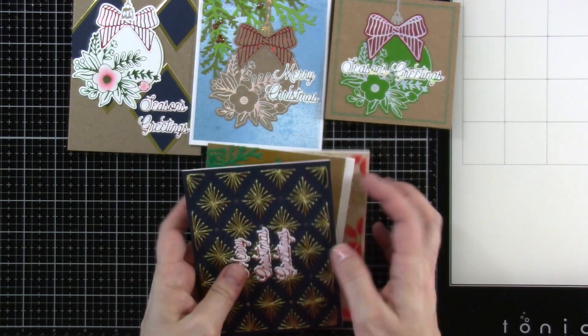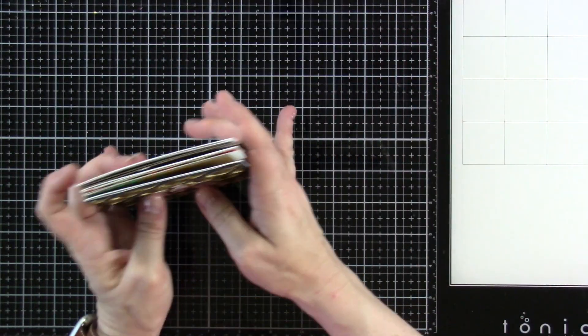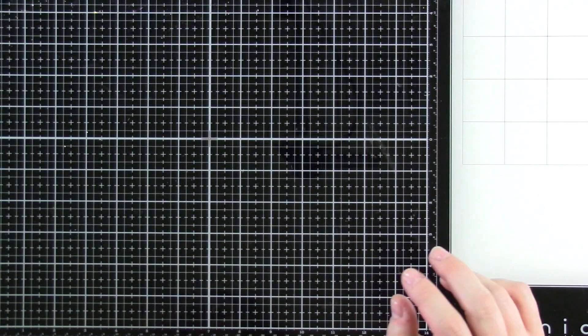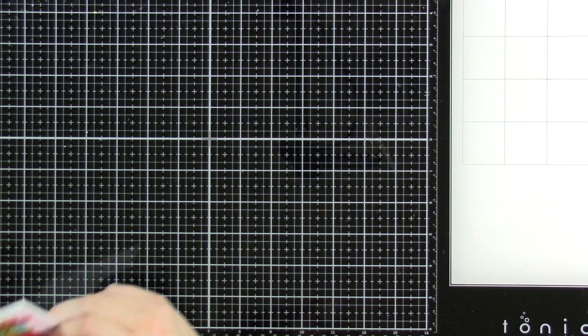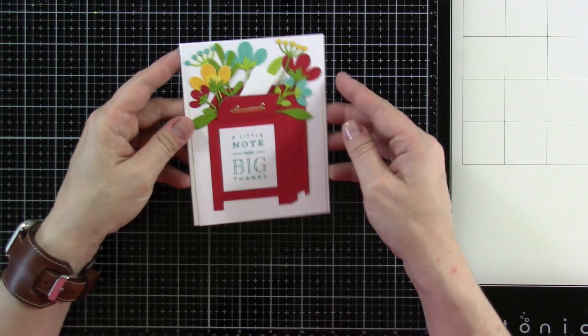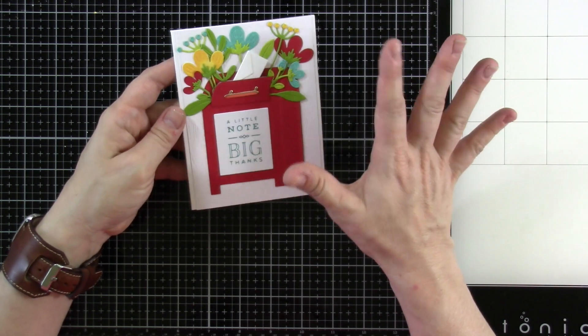And then the last one I have to show you today, we're going to make a card afterwards. But I have the Parcel and Post. So there's three different parts to this that I have. So I've got the Parcel and Post Mailbox, which is the mailbox.